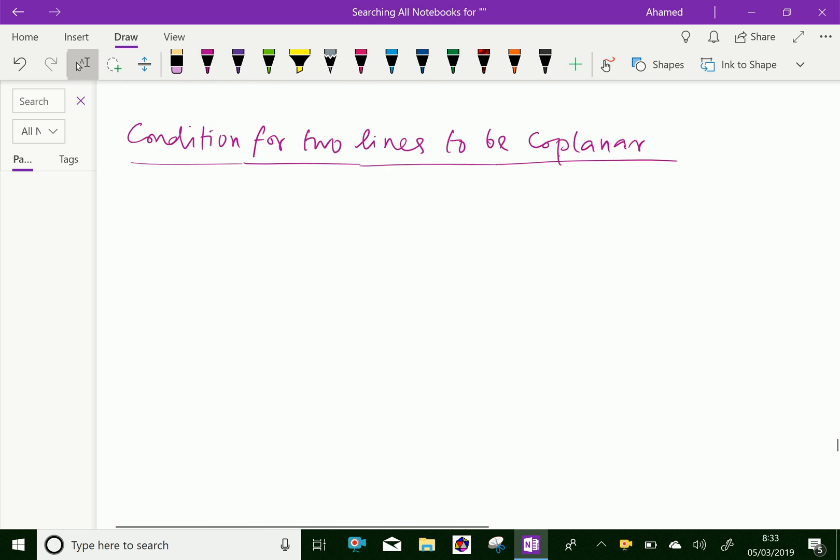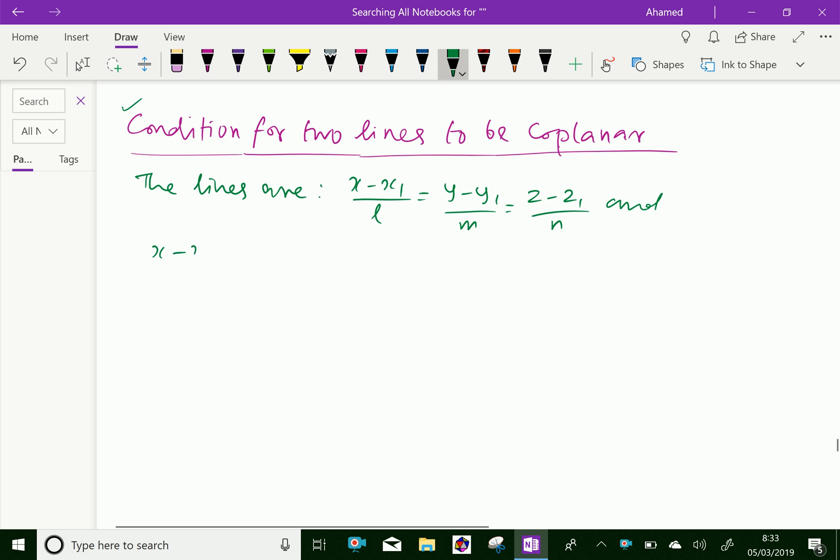Now, let us discuss the condition for two lines to be coplanar. Let the two lines be x minus x1 over a1 equals y minus y1 over b1 equals z minus z1 over c1, and x minus x2 over a2...